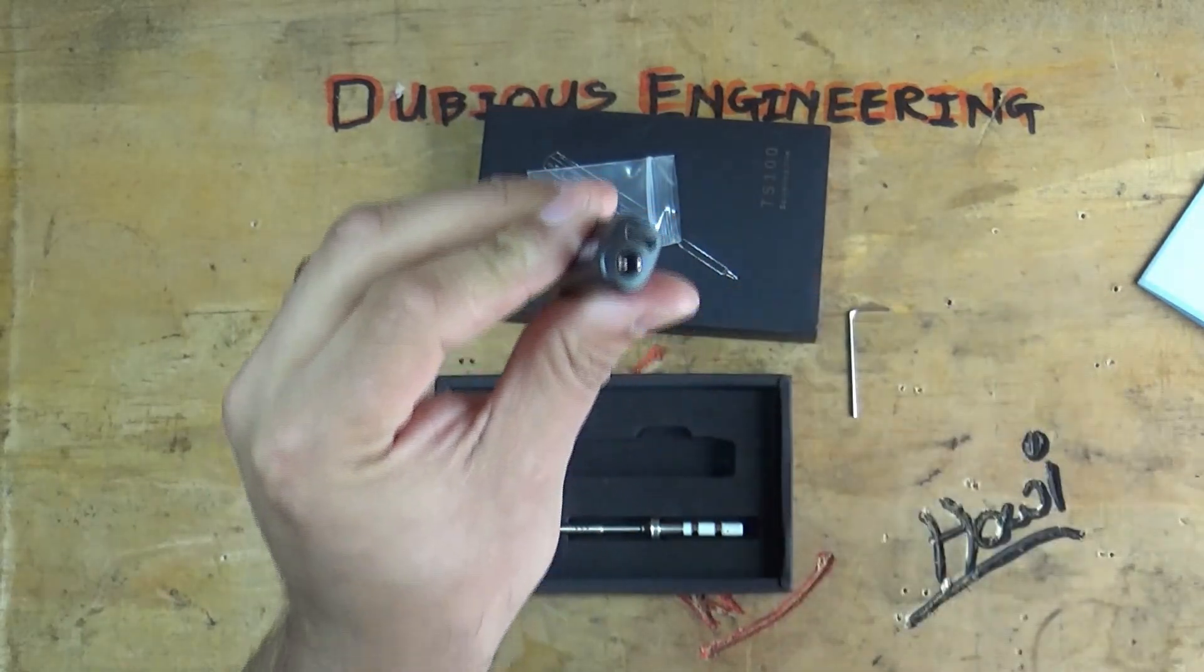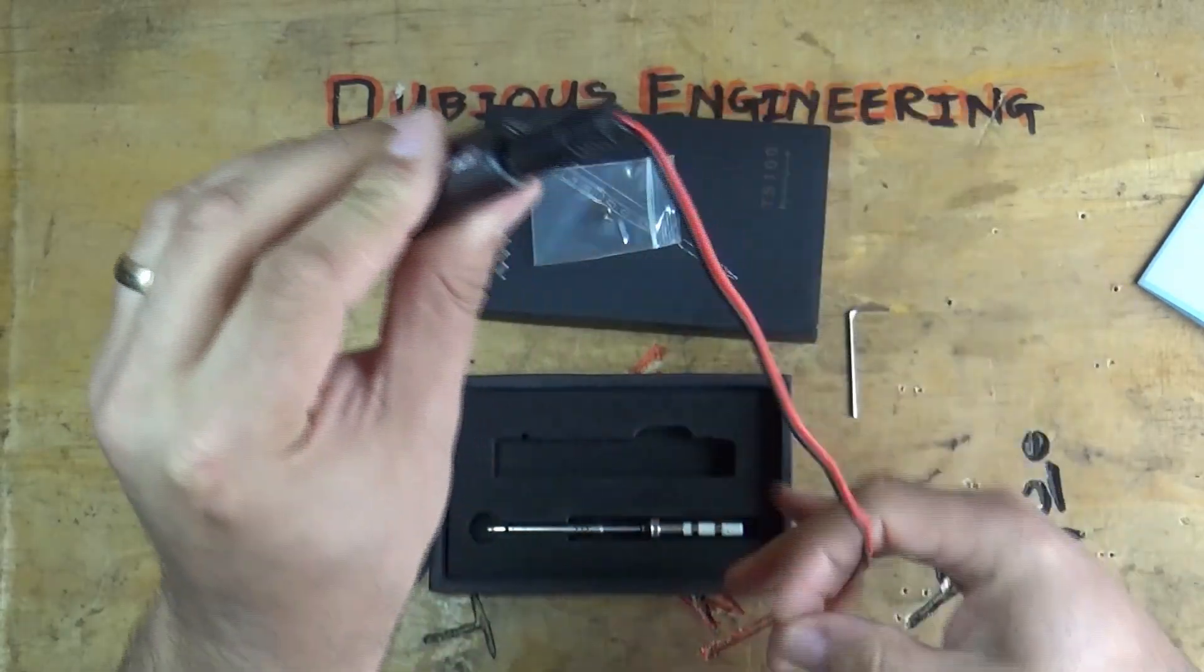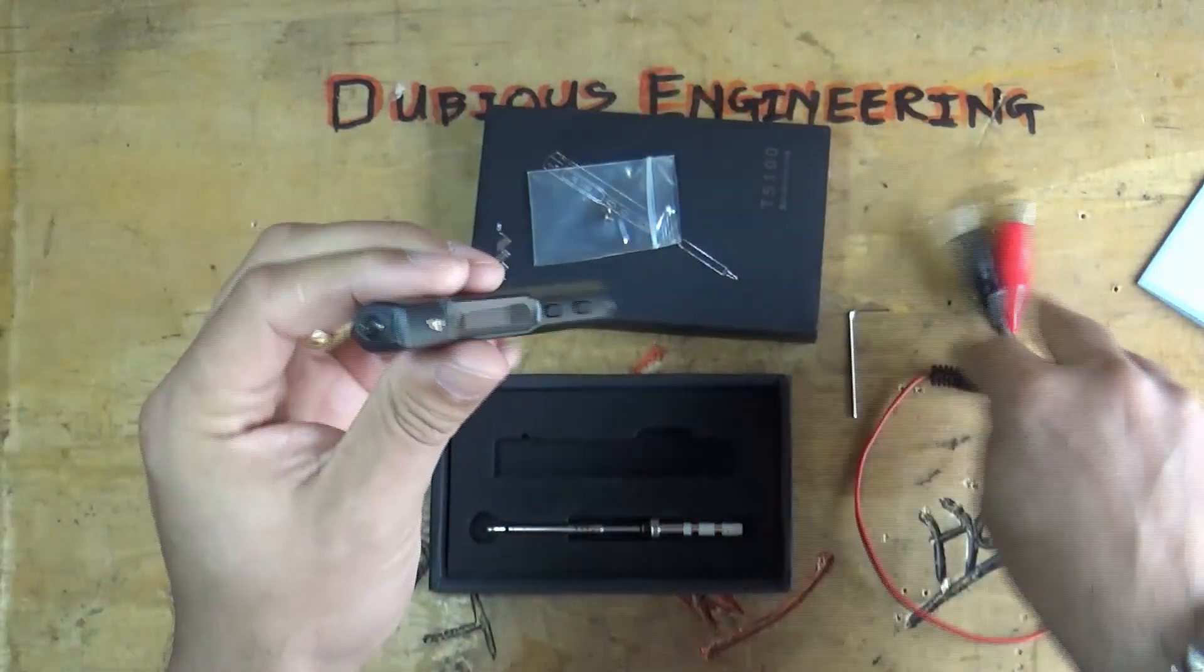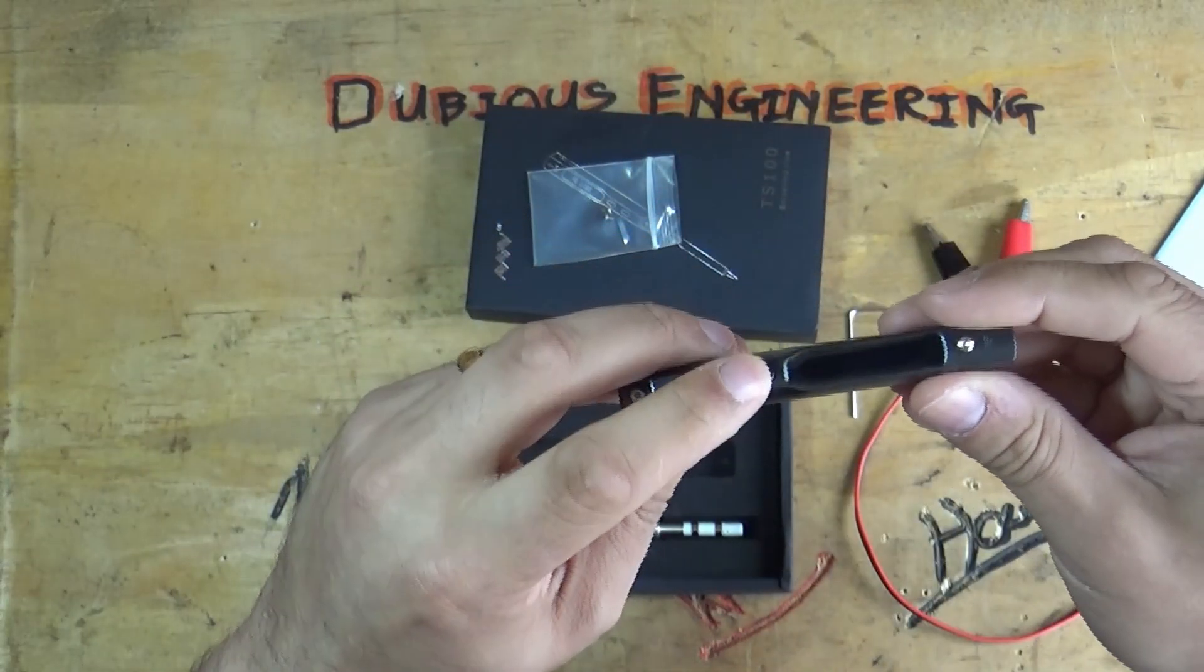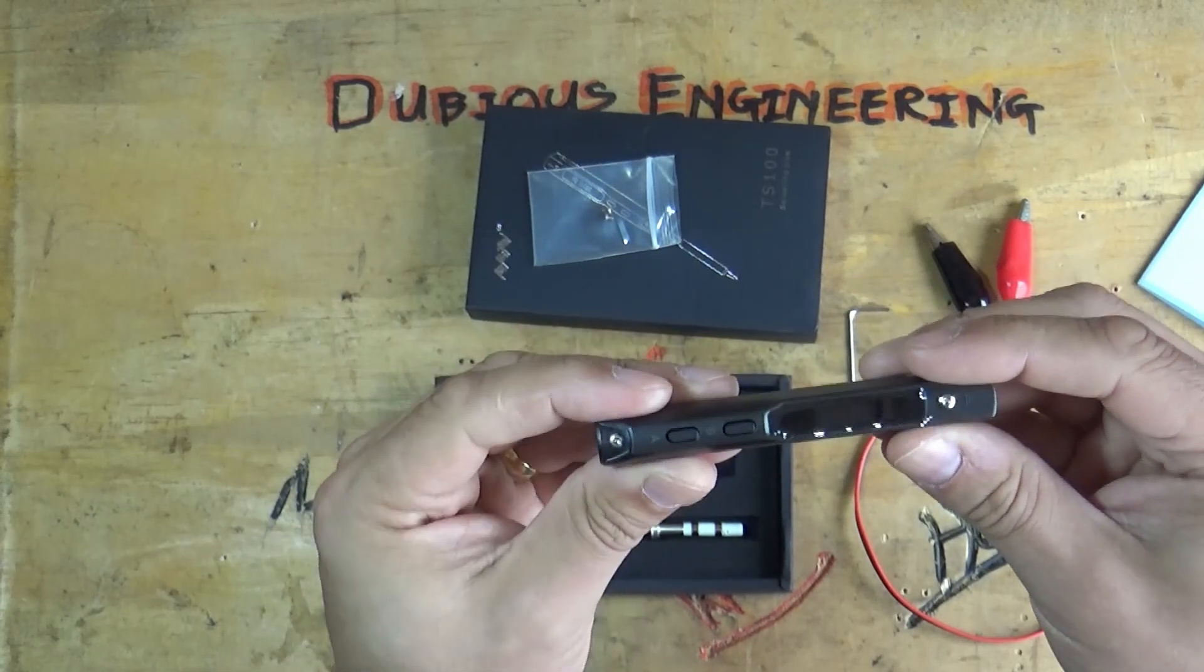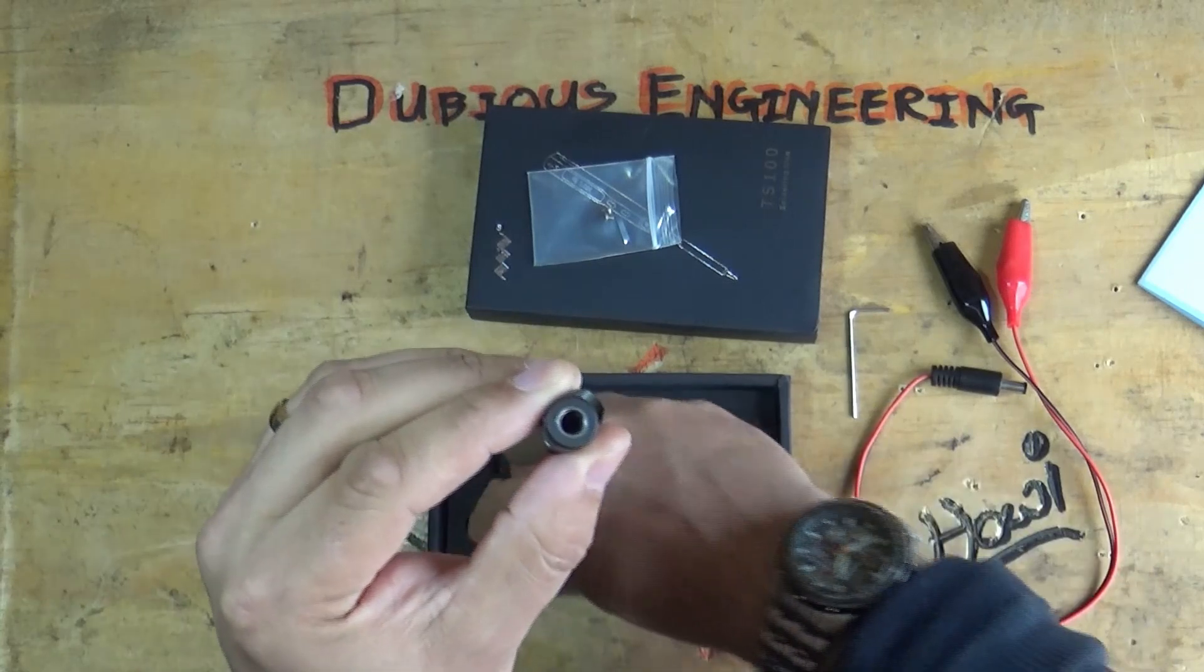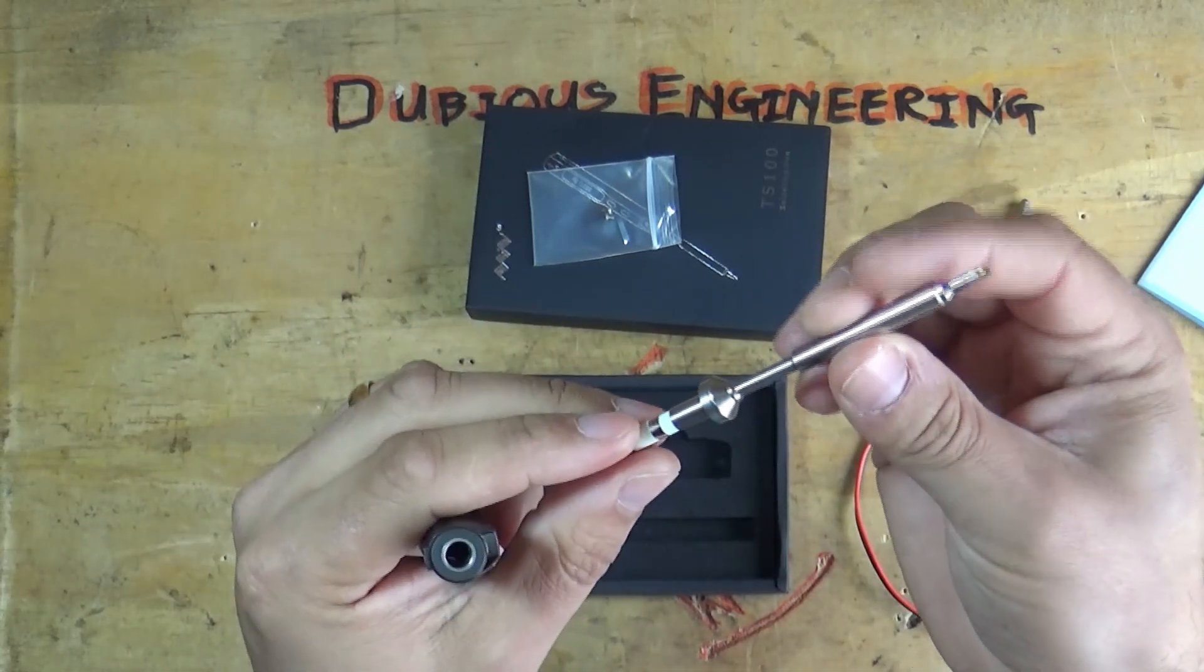It's powered by a little barrel jack. It doesn't come with a cable, point to note. So you have to find your own little barrel jack connector. I've got one with a couple of crocodile clips on it. And you can update the firmware in this and make it do all sorts of weird and wonderful stuff. It's got an OLED display on the front of it, a couple of buttons, and you plug in the iron tips.